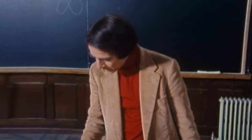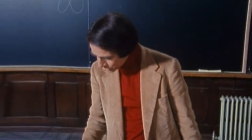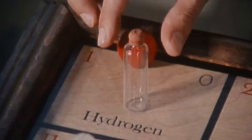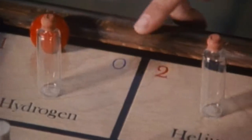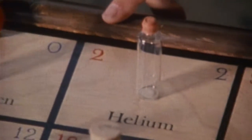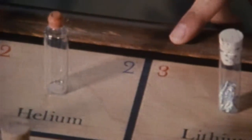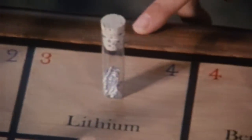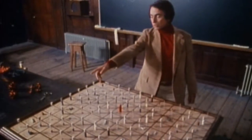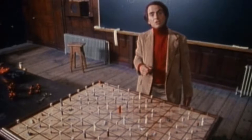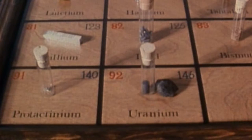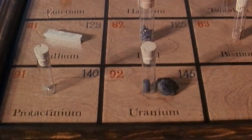If you're an atom and you have just one proton, you're hydrogen. Two protons: helium. Three: lithium. All the way to 92 protons, in which case your name is uranium.